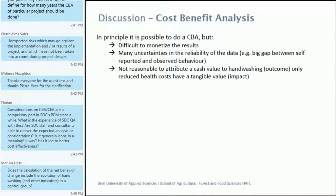The question is: is it possible to do a cost-benefit analysis? It's difficult to monetize the results and there are many uncertainties in the reliability of the data. There is a big gap between self-reported and observed behavior — people tend to say yes they always wash their hands very well, but when you observe it the result is quite different. So what do you consider when you do the calculation? You may do it with different options.